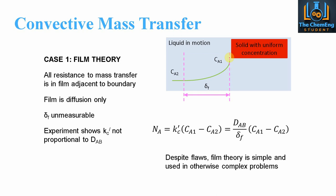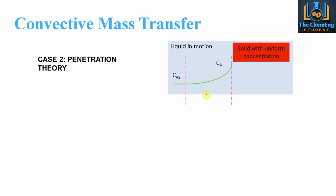Experiments show that k'c is proportional to the diffusivity. So the total flux NA, which equals k'c multiplied by the change in concentrations CA1 minus CA2, will equal the ratio of the diffusivity to the film region thickness, multiplied by CA1 minus CA2. Despite its flaws, film theory is very simple: rather than knowing k'c explicitly, we can replace it with the diffusivity divided by the film distance. This works for certain problems, but that's where case two — penetration theory — comes in.